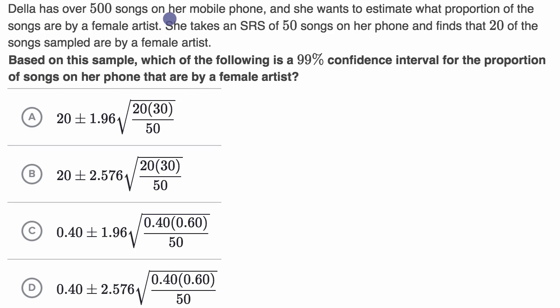We're told Della has over 500 songs on her mobile phone, and she wants to estimate what proportion of the songs are by a female artist. She takes a simple random sample of 50 songs on her phone and finds that 20 of the songs sampled are by a female artist.